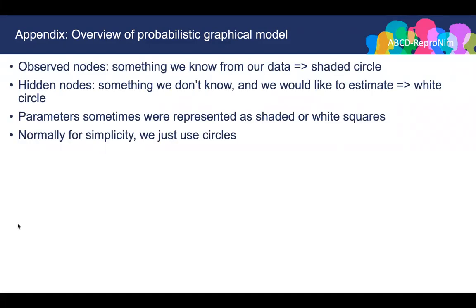Two basic terms in the probabilistic graphical model are observed nodes and hidden nodes. The observed nodes represent something we know and something that is given. It normally represents our data, and we use a shaded circle to indicate it. The hidden nodes are something we don't know, normally representing something we would like to infer. We use a white circle to indicate it.